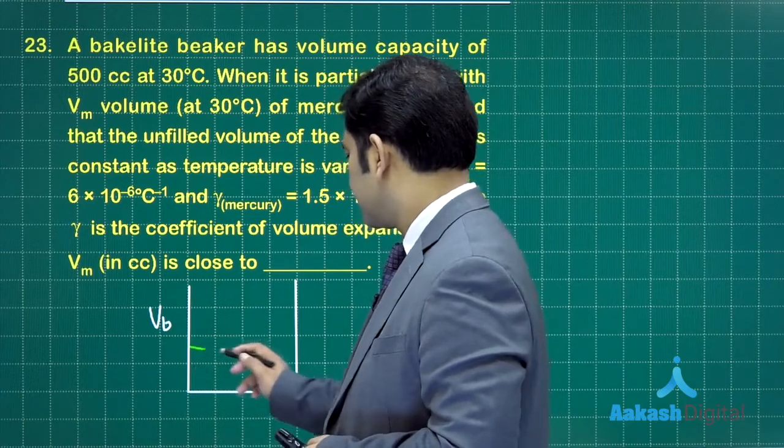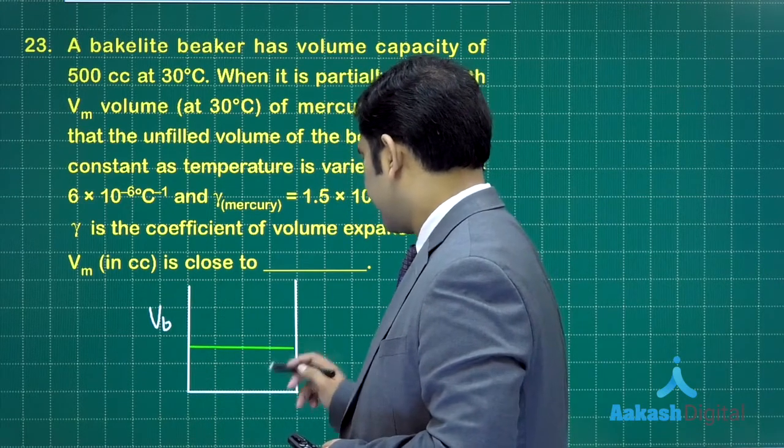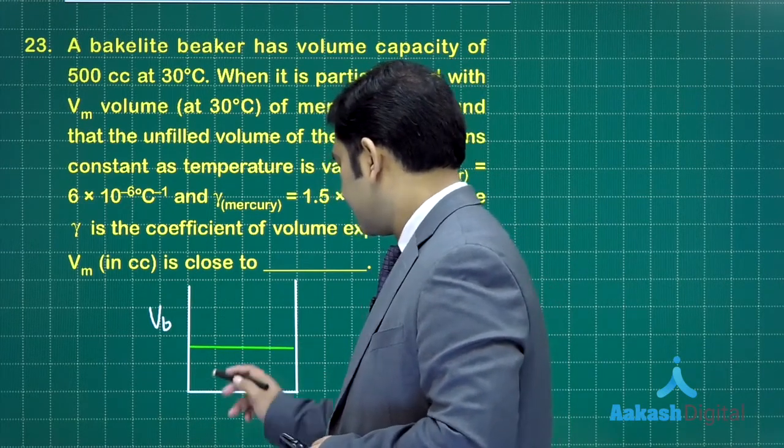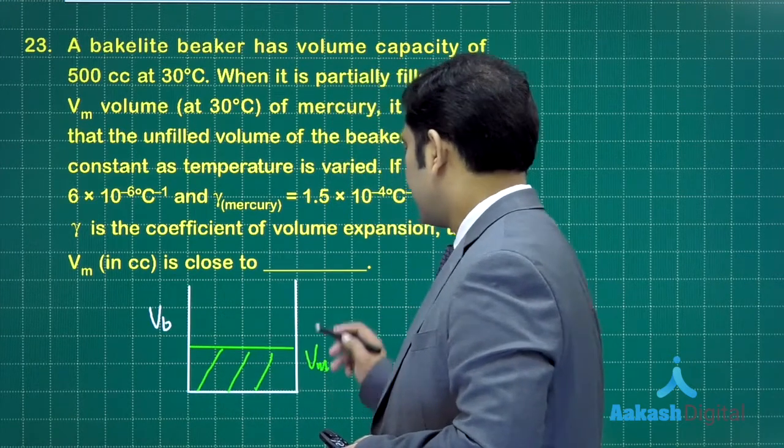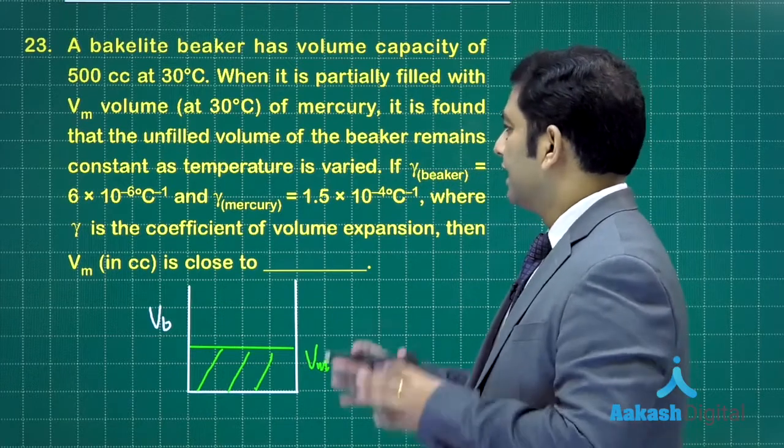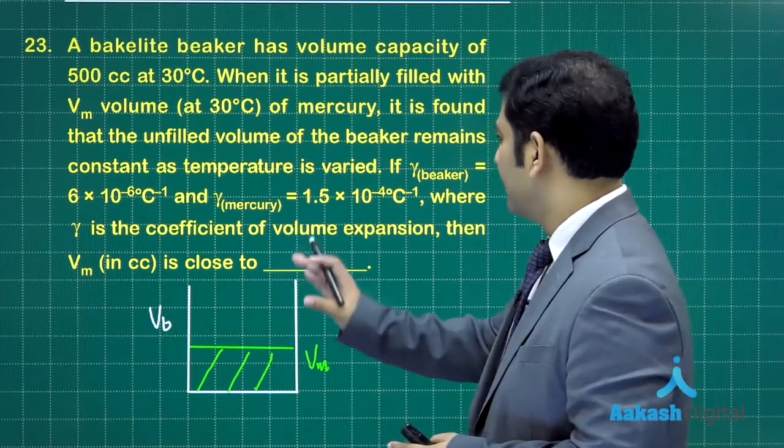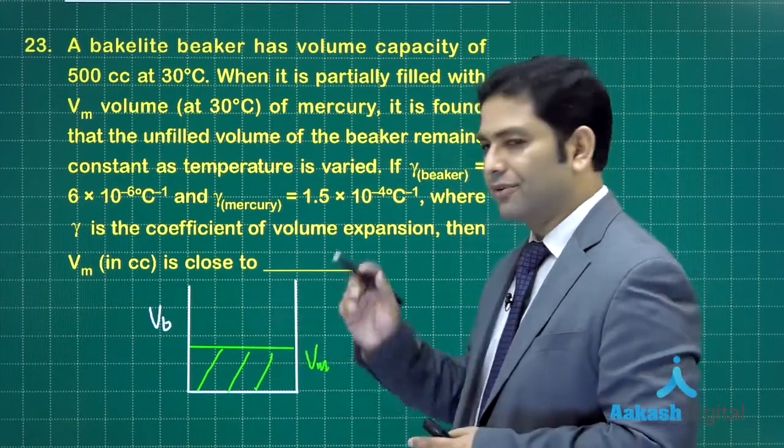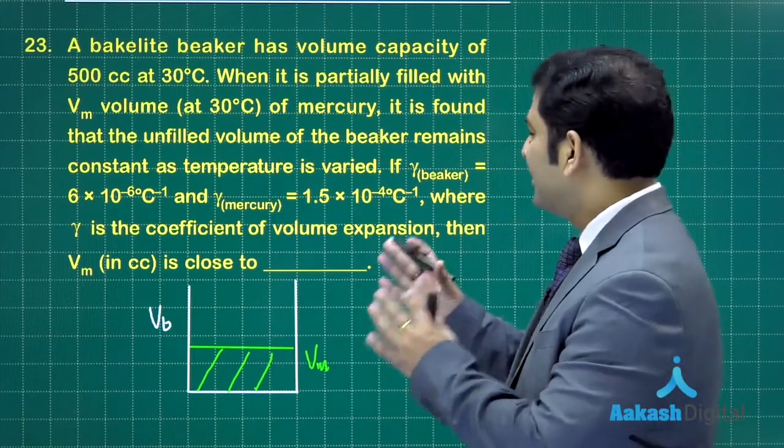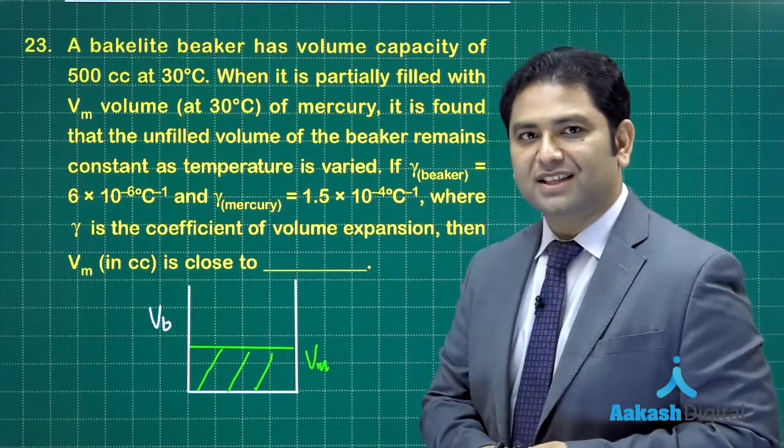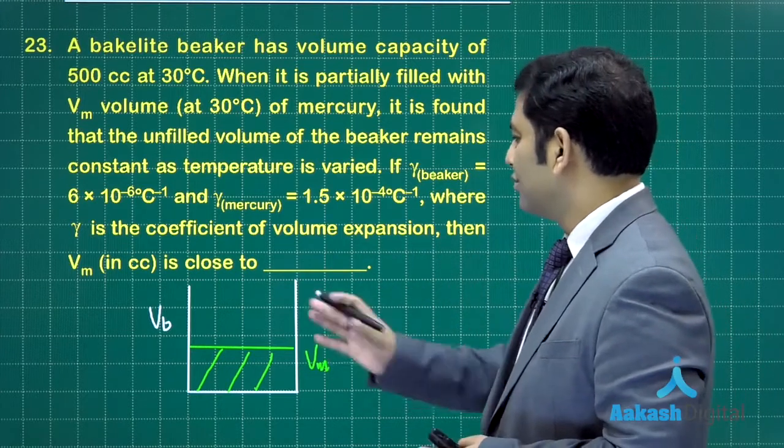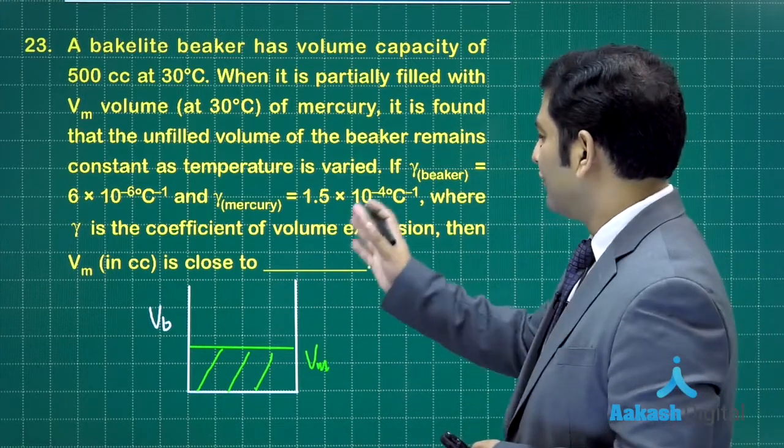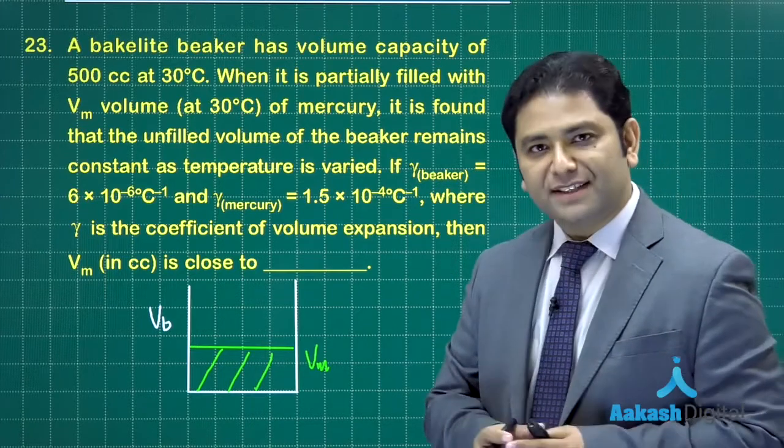It is partially filled with mercury. So we would assume the mercury is filled up to this thing. This particular part, the volume of mercury, let's call it as Vm. Now it is found that the unfilled volume, this particular volume, does not change with temperature.